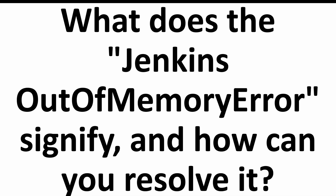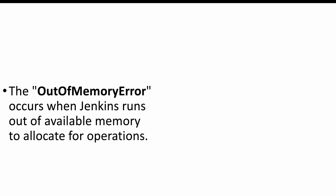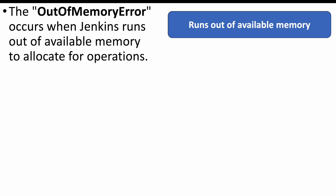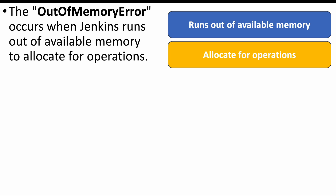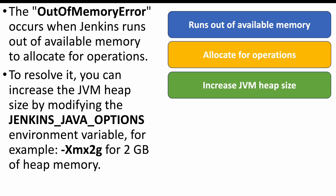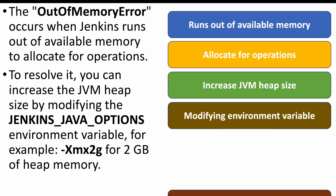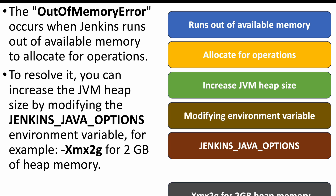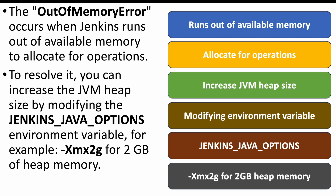The first question: what does the Jenkins out of memory error signify and how can you resolve it? This error indicates that Jenkins has no more memory to run any operations — it won't be able to run any jobs. To resolve this, we need to increase the JVM heap size using the JENKINS_JAVA_OPTIONS environment variable. For example, use -Xmx2g to allocate 2 GB of heap memory.